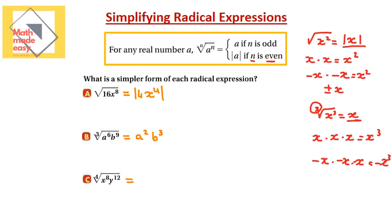In this question we need the fourth root of x to the power of 8 times y to the power of 12. The fourth root of x⁸ is x squared, and the fourth root of y¹² is y cubed. Because the index four is even, I put the result inside an absolute value.